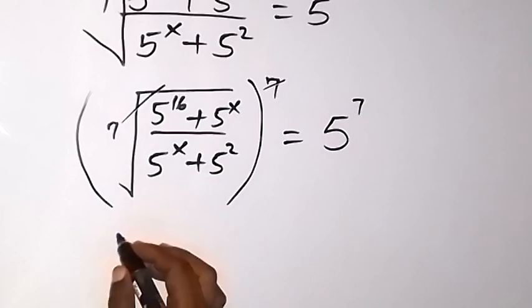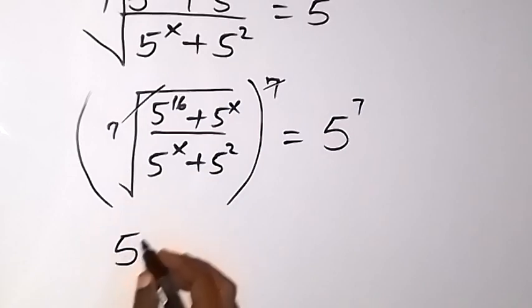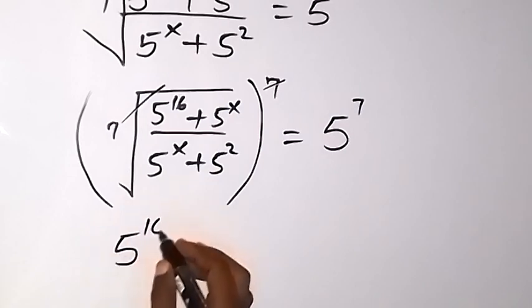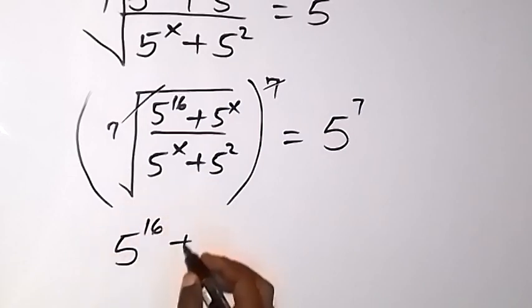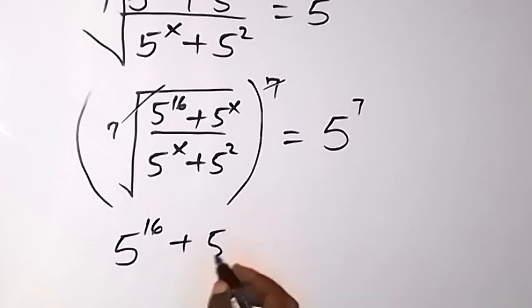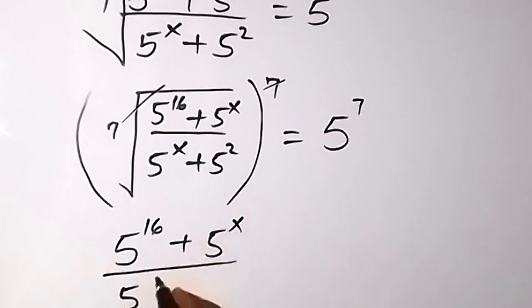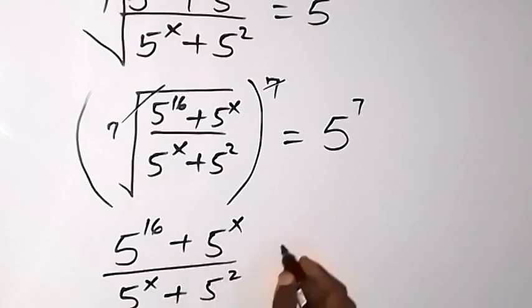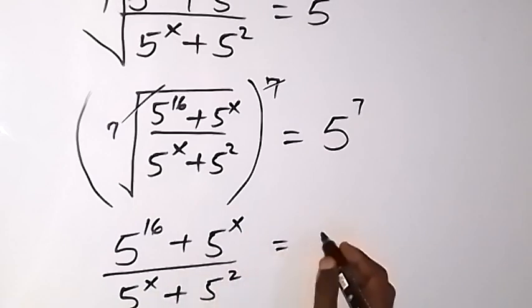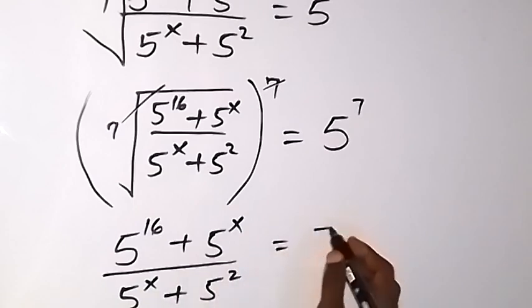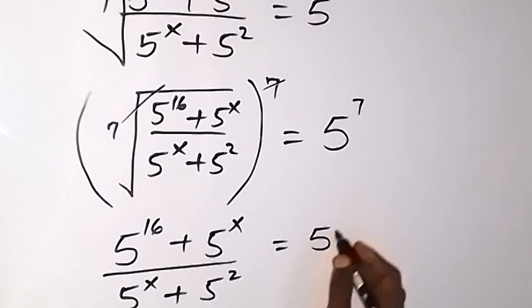The 7th root and the power 7 cancel each other, so what we have left is 5 raised to power 16 plus 5 raised to power x, divided by 5 raised to power x plus 5 raised to power 2, equal to 5 raised to power 7.